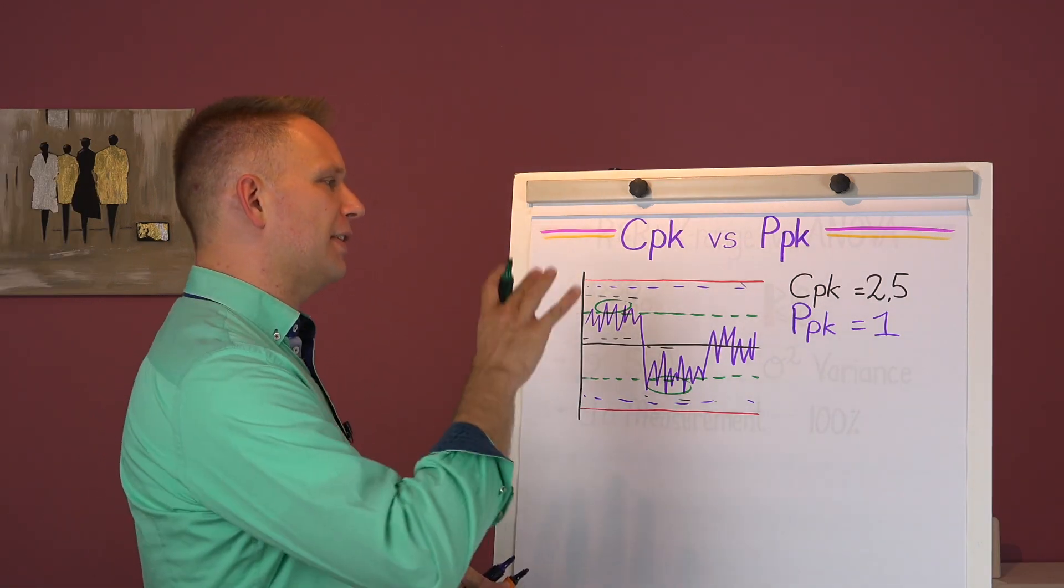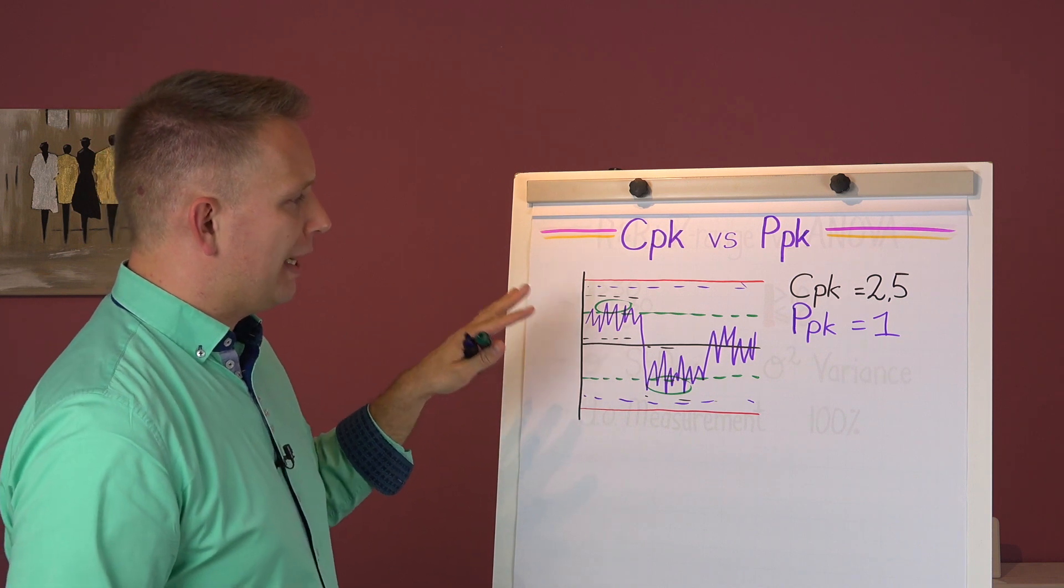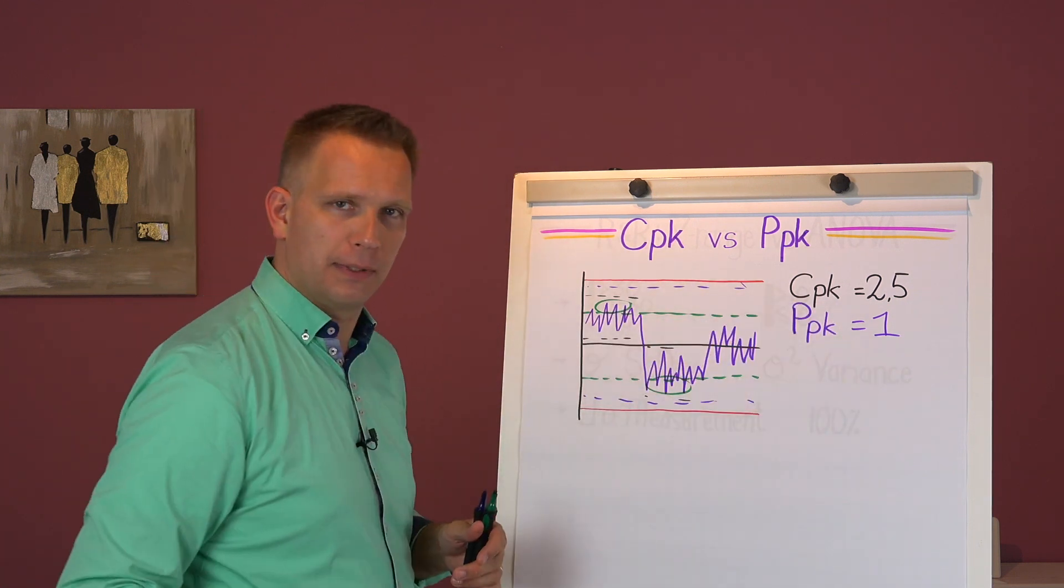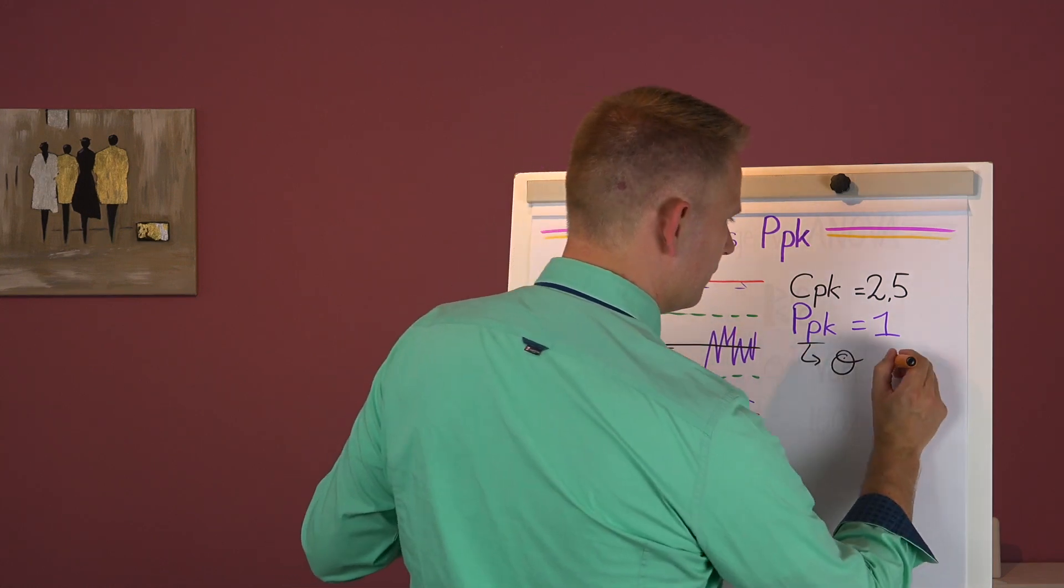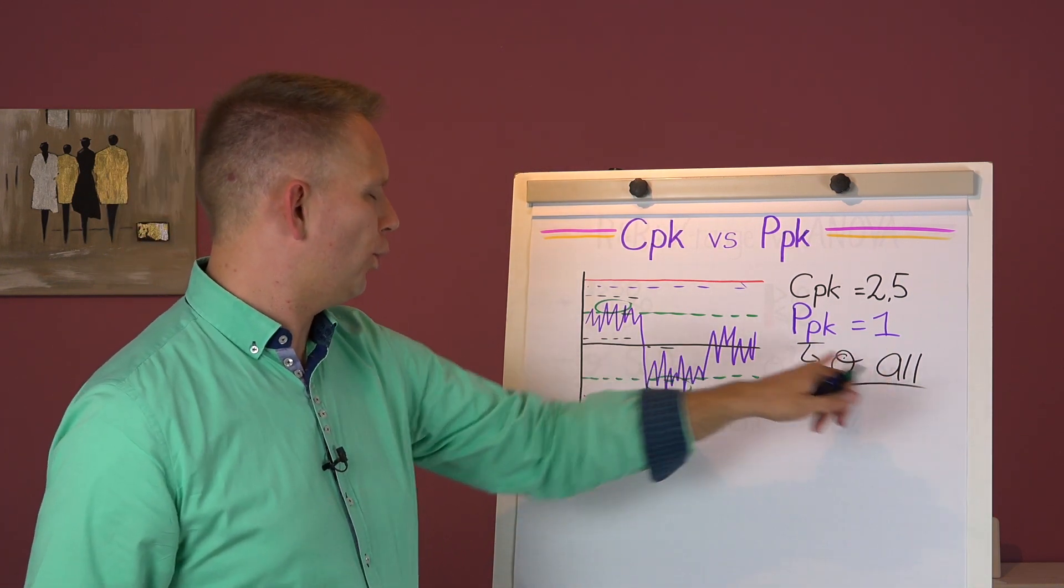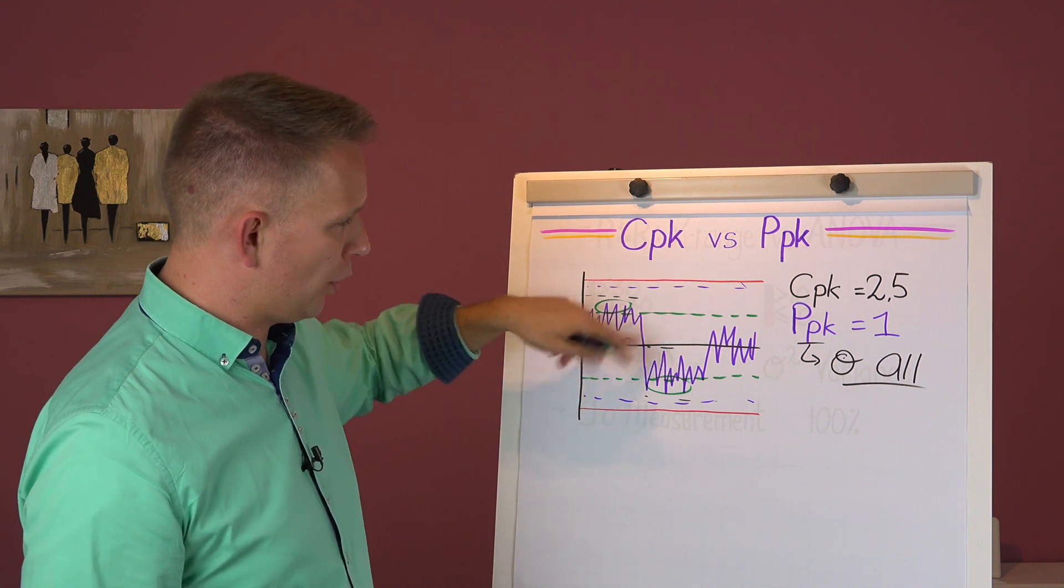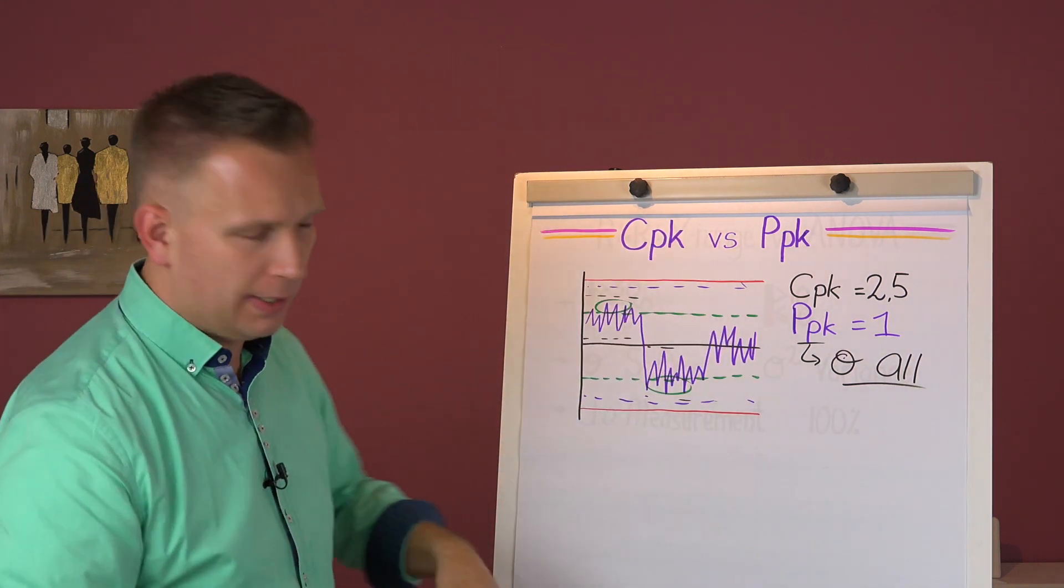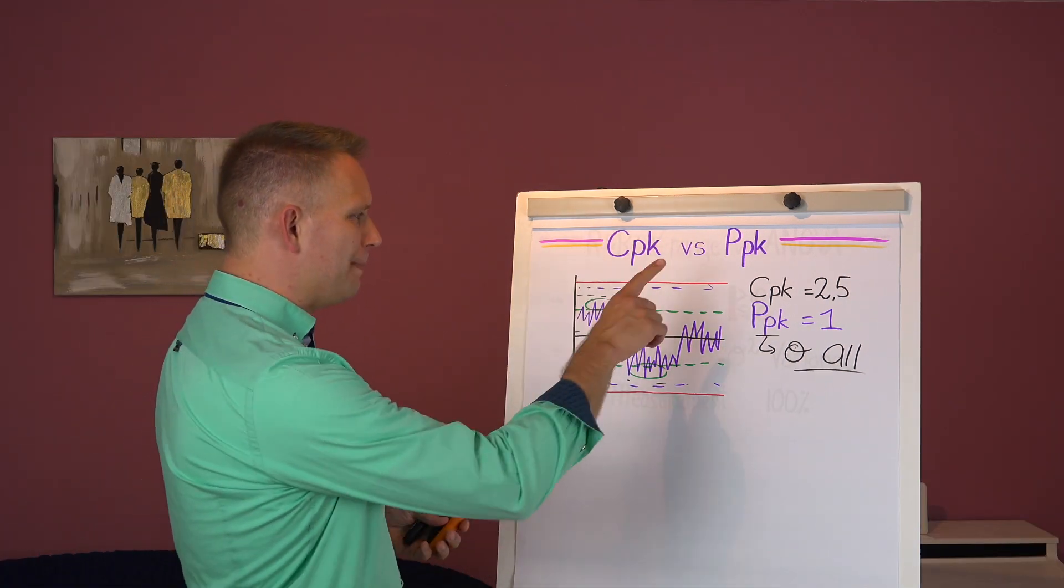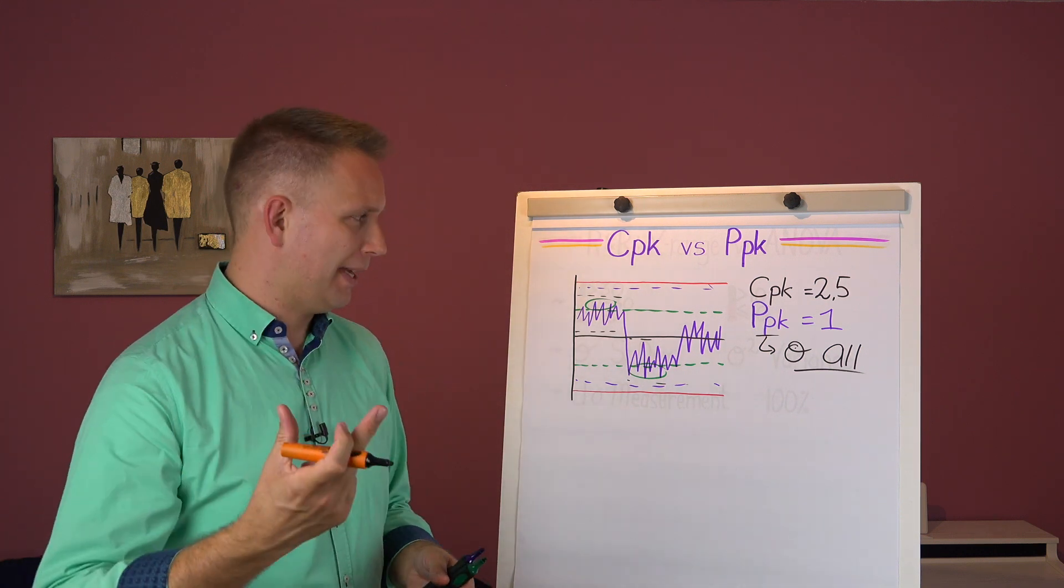You see what we do is we estimate the standard deviation. Now when we put this into a PPK type of calculation, we calculate the standard deviation of all of the data that we have. And it will take this mean and it will go and calculate all of those differences and square them up and take the square root of it. But it'll come with a standard deviation based on everything. But both the CPK and how we work with SPC, they use ranges to estimate the standard deviation.